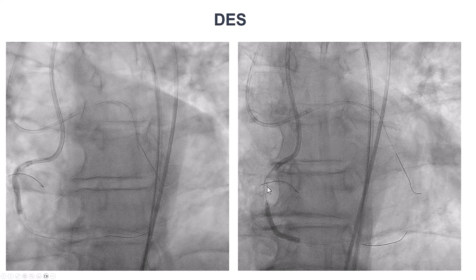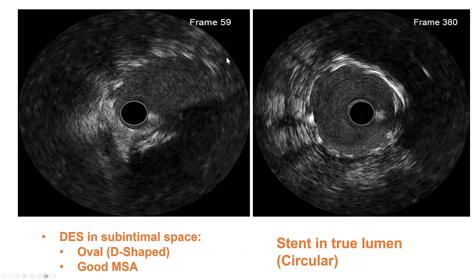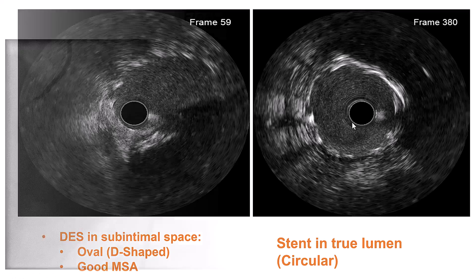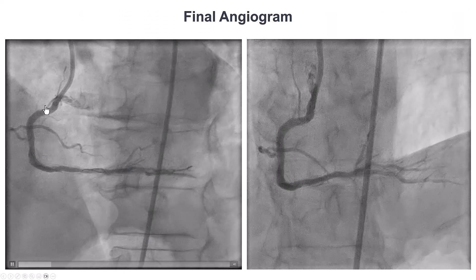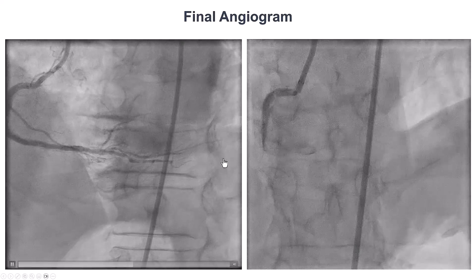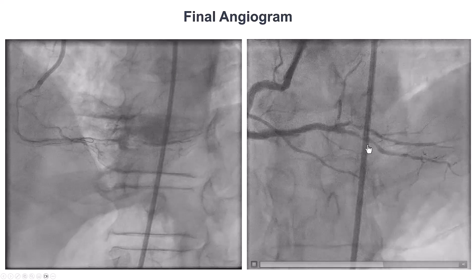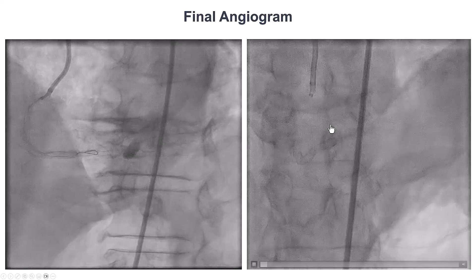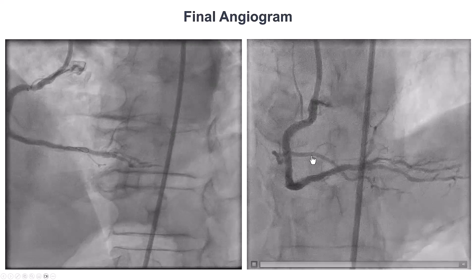We pre-dilated and stented with drug-eluting stents. Although by IVUS the stent was not round, the lumen area was quite good — an oval shape. More proximally, where the stent was in the true lumen, we achieved nice stent expansion with a circular configuration. The final angiogram shows TIMI 3 flow into the right coronary artery and into the PDA. There is some diffuse disease in the PDA posterolateral, which we elected not to treat.